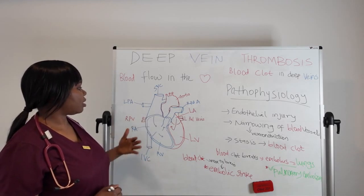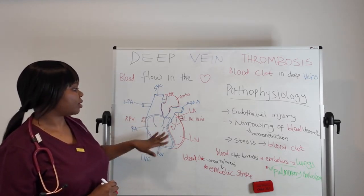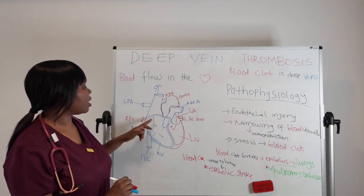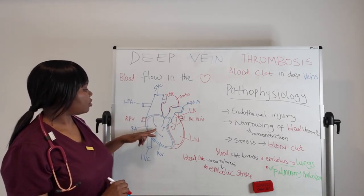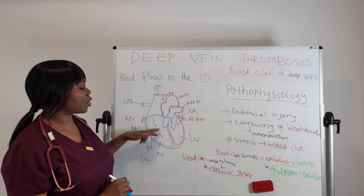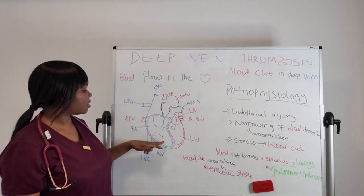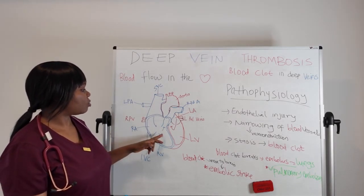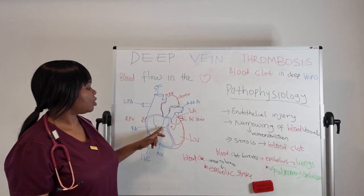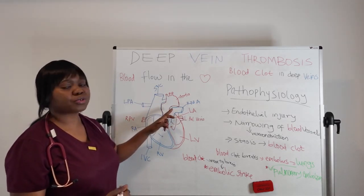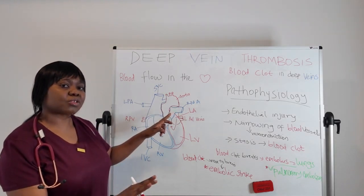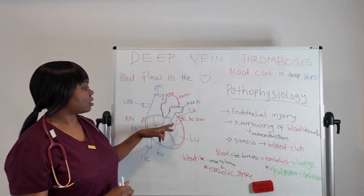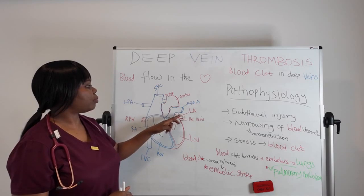When electrical conduction happens and discharges occur, the blood is pushed down through the right atrioventricular valve — the tricuspid valve — into the right ventricle. The heart contracts and blood is pushed through the pulmonary valve into the lungs for oxygenation. Once oxygen is added, the blood becomes red and is returned to the left atrium through the pulmonary veins.